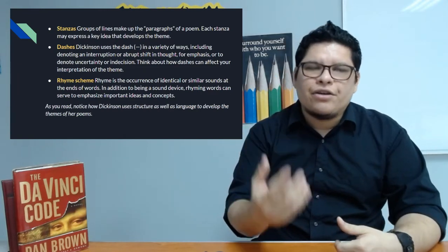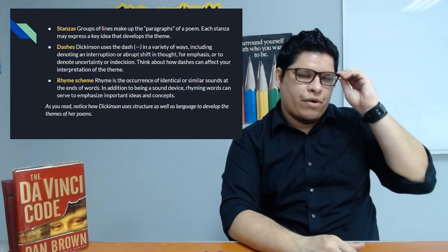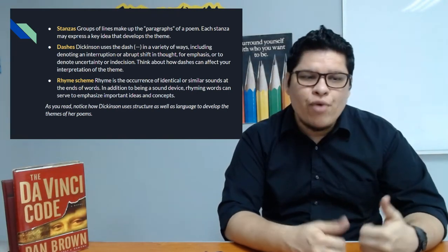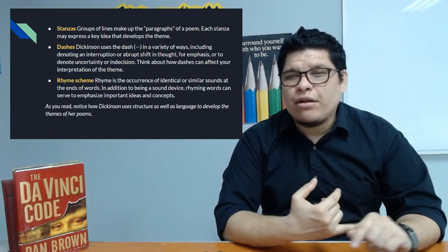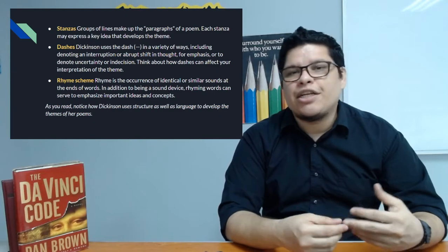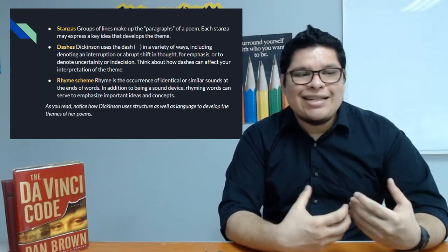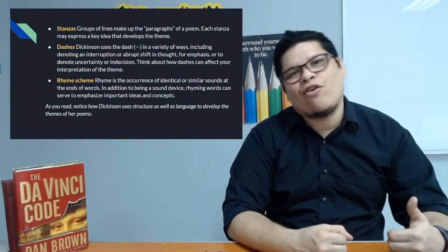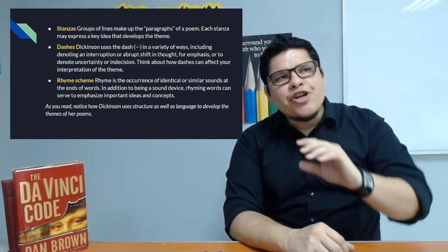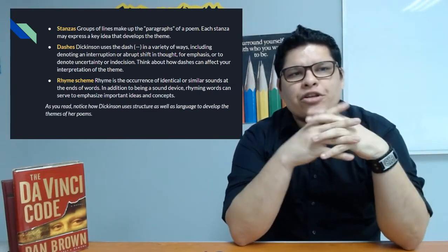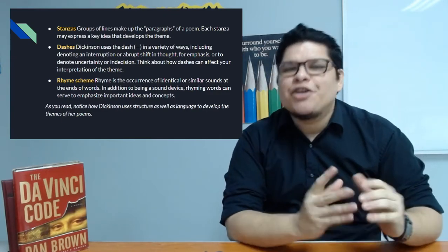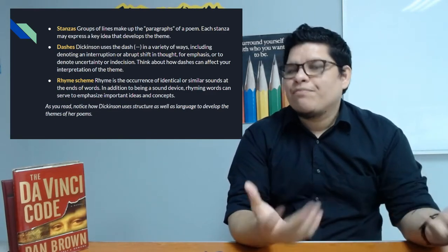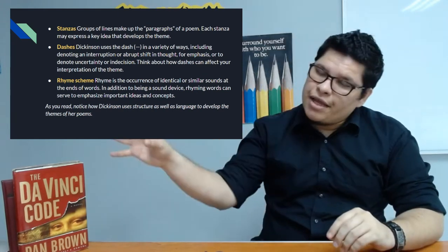Dashes - and this is very typical of Dickinson - she uses the dash in a variety of ways, including to denote an interruption or an abrupt shift in thought, for emphasis, or to denote uncertainty or indecision. We have to think about how those dashes can affect the interpretation not only of the poem or the verse or the stanza, but the whole theme in the poem. Not many poets or writers make the use of the dash as Emily Dickinson does, and she does it with a specific purpose. She will convey interruptions, emphasis, or many different other purposes as long as we can analyze the main idea of the theme in the poem.